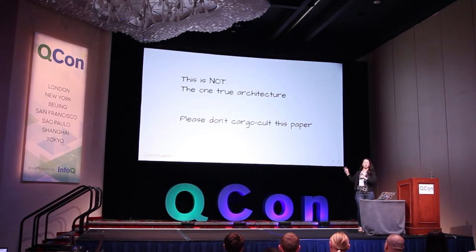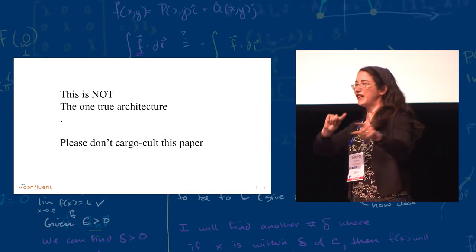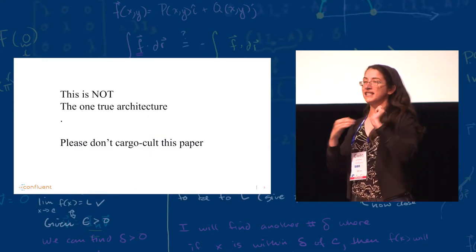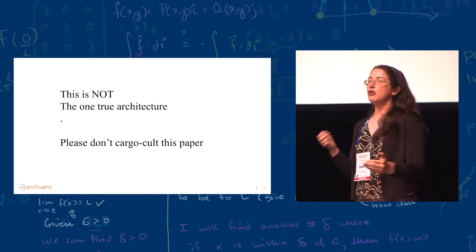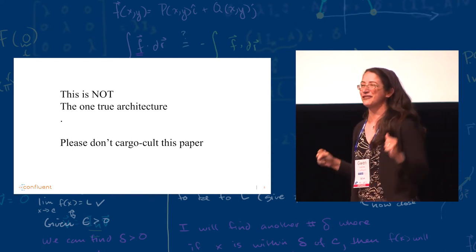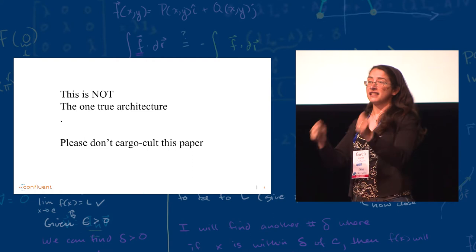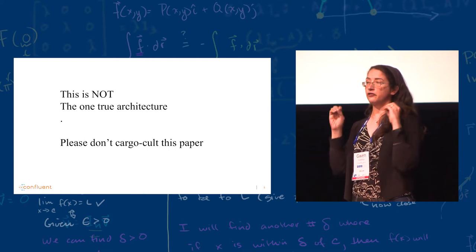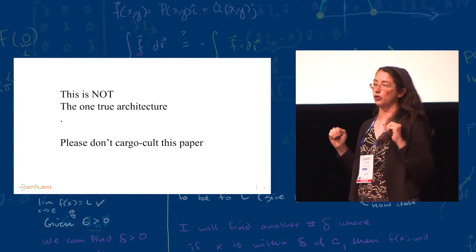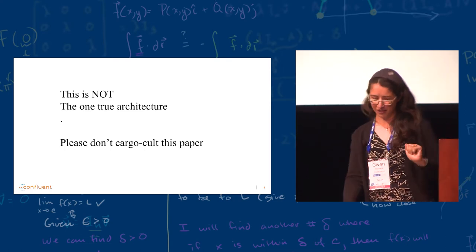Which means that the one thing you shouldn't do, and I'll be very mad if anyone goes out of the room and goes and do it, is to basically copy all their decisions and say, we built stream processing just like in Facebook. Because your system is not like in Facebook, and they carefully detail all the decisions so you can make the right decisions on your own.